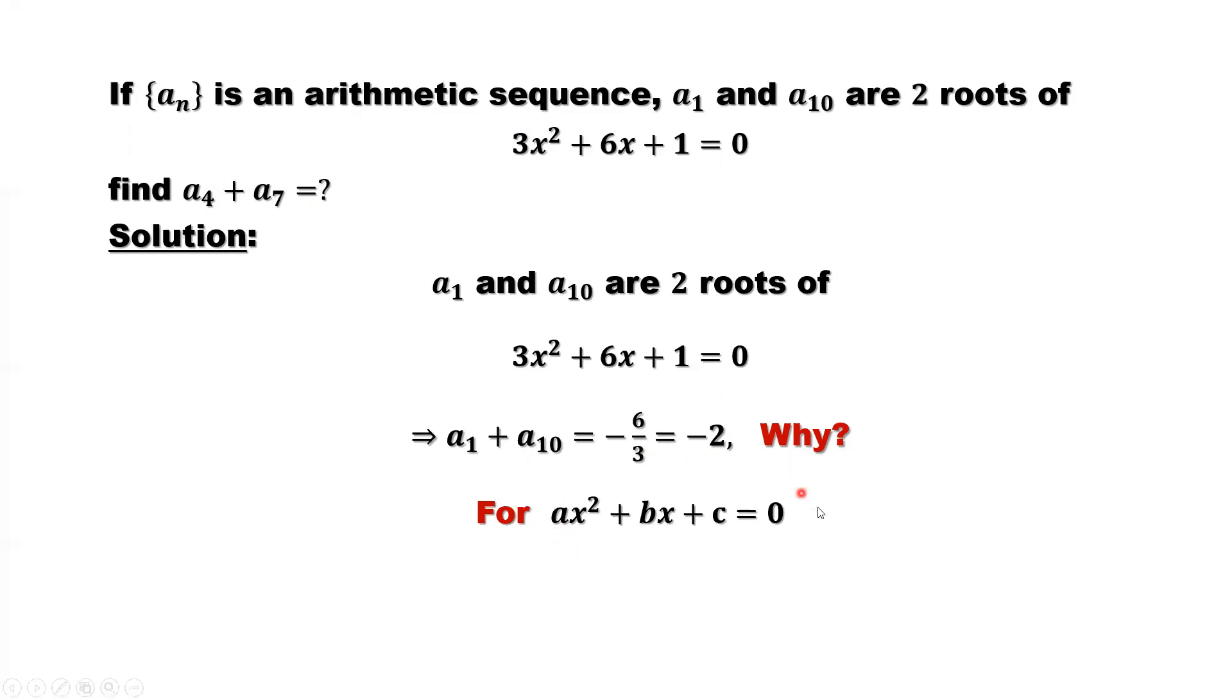for a quadratic equation, we have this kind of relationship between solutions and the constants A, B and C. The sum of two roots of this equation equals negative B over A. By the way, we also know the product of the two roots equals C over A.